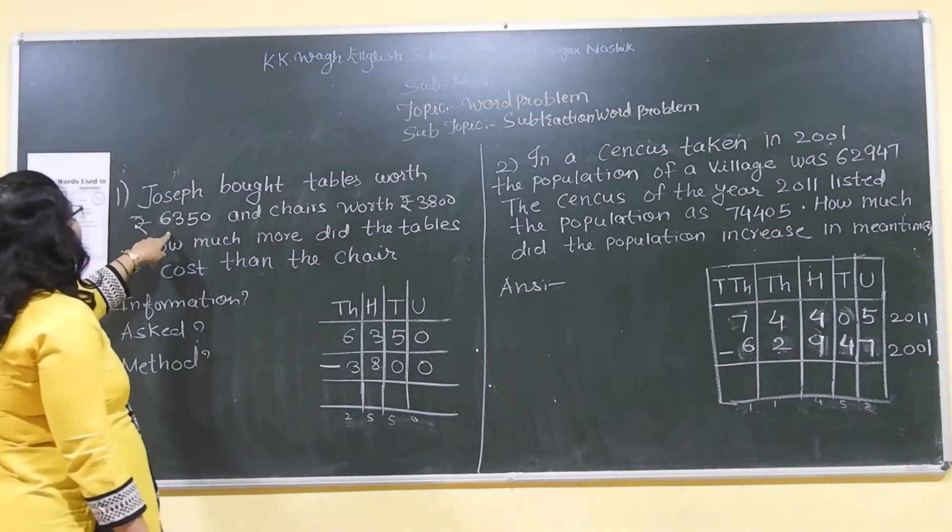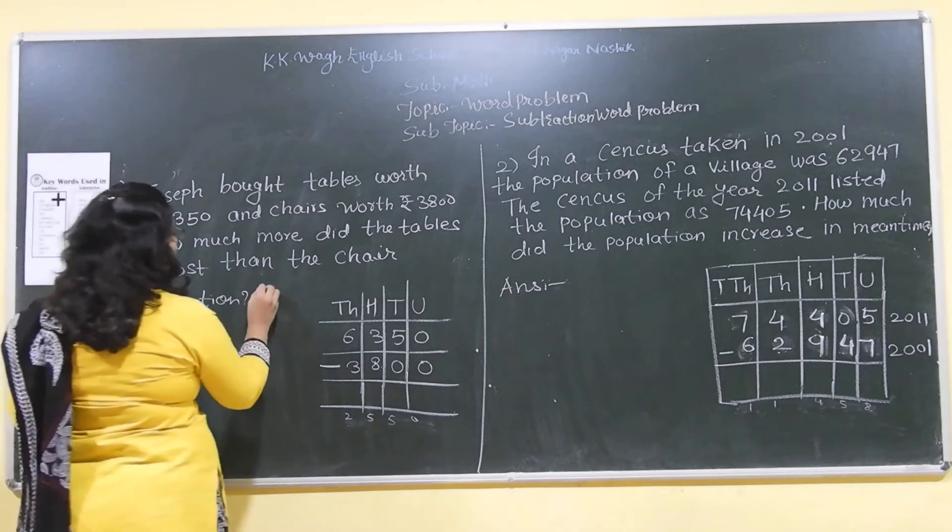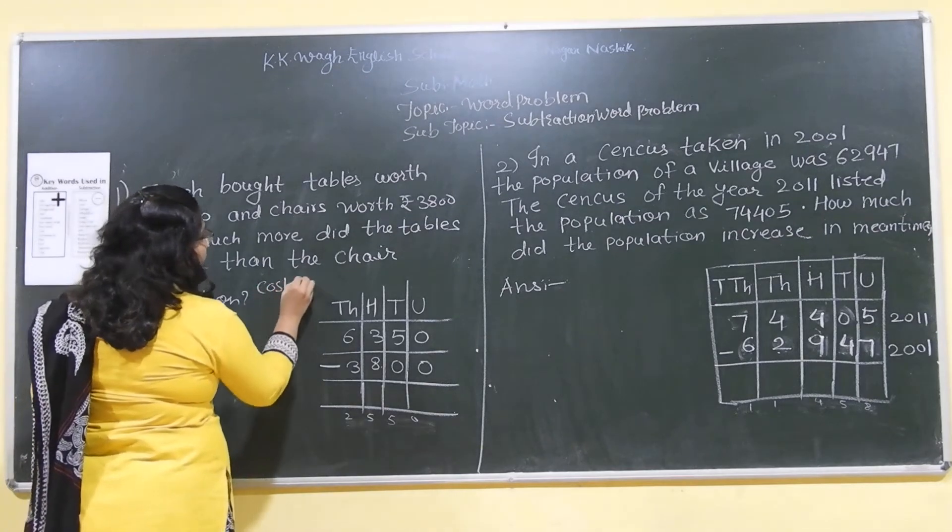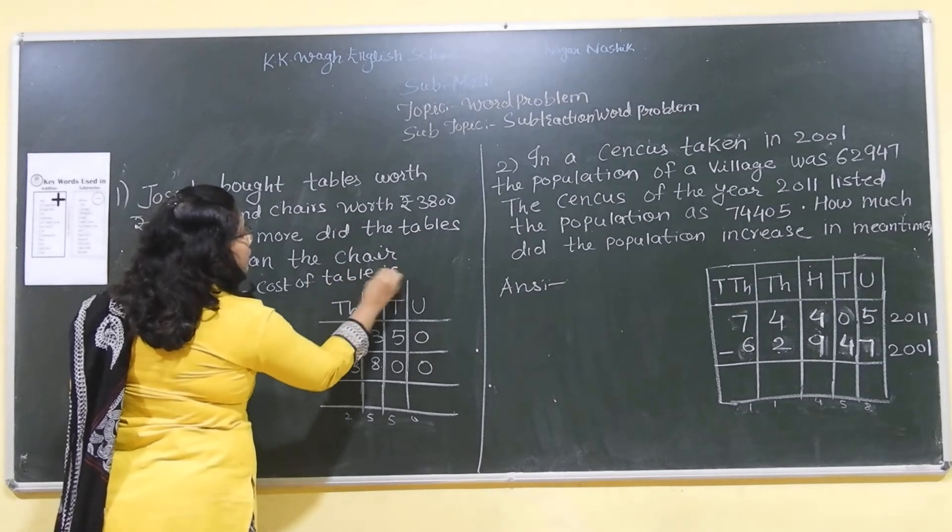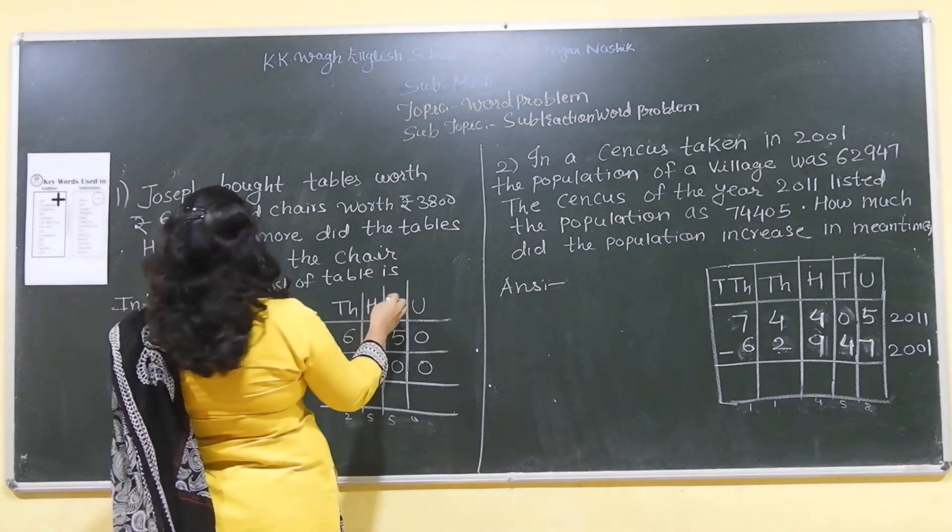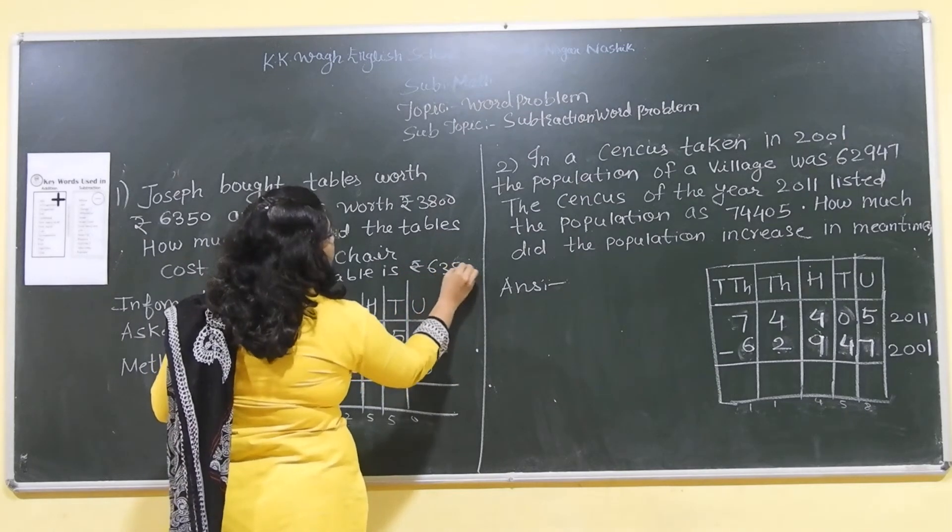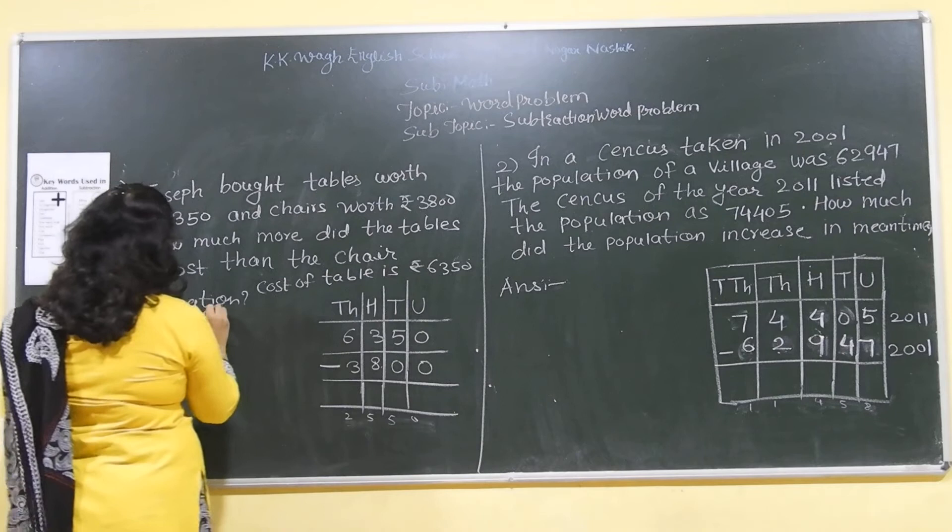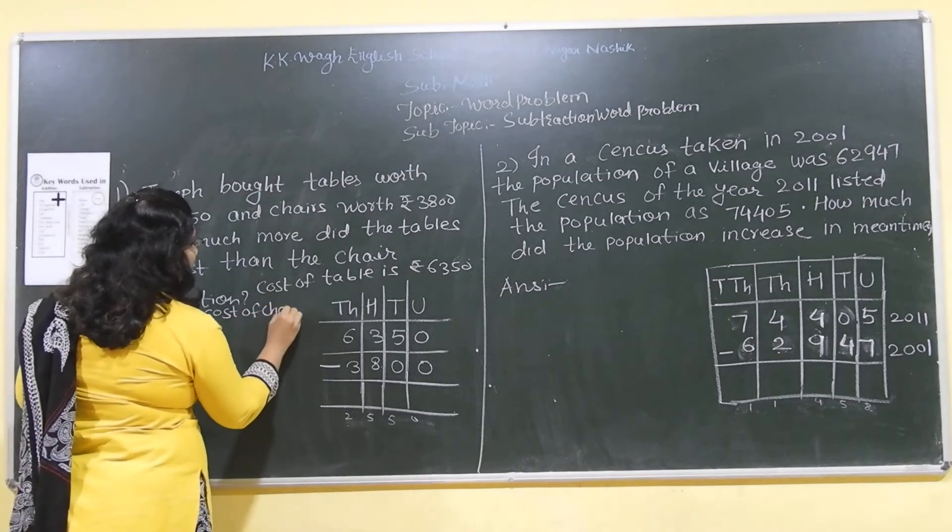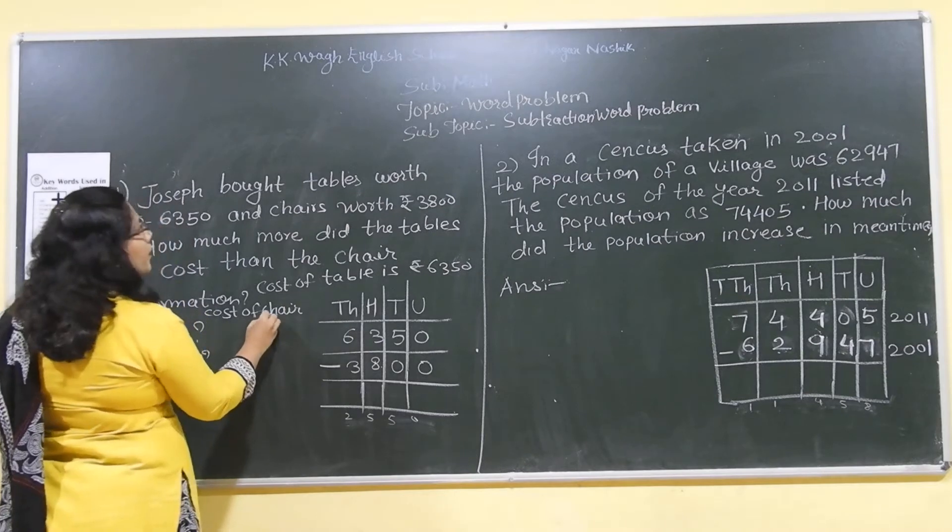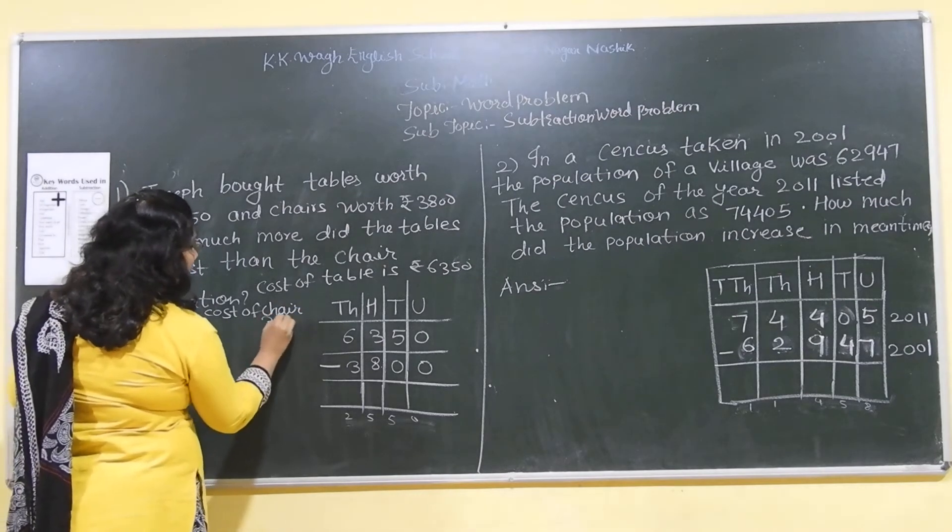Here the cost of table and cost of chair is given. Okay, cost of table is rupees 6350 and cost of chair is rupees 3800. Okay.